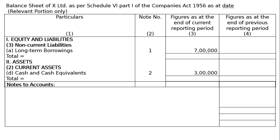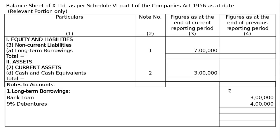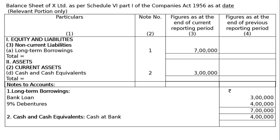Notes to accounts — Note 1: Long-term borrowings. We have taken a loan from the bank: bank loan Rs.3 lakhs, and 9% debentures placed as collateral — Rs.4 lakhs. Total liability is Rs.7 lakhs. Note 2: Cash and cash equivalents — cash at bank is Rs.3 lakhs. There is no sufficient information for the full preparation of the balance sheet, so the above balance sheet cannot be totalled. This is the final answer.